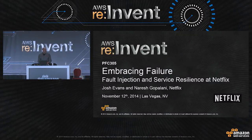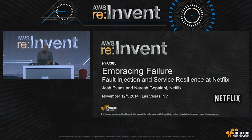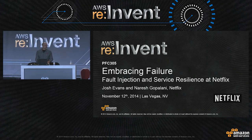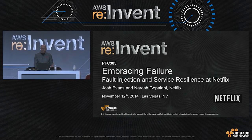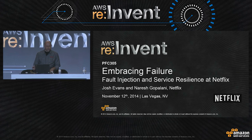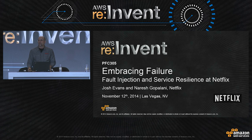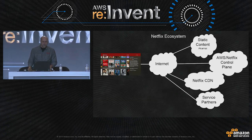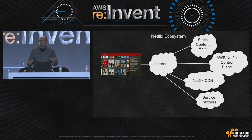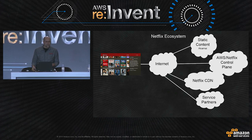Let's go ahead and get started. By way of introductions, I'm Josh Evans. I'm the director of operations engineering at Netflix. With me is a software engineer and architect. We're going to talk to you today about embracing failure and about introducing failure into your systems to make them more resilient. Before I do that, I want to talk a little bit about the Netflix infrastructure. As hopefully most of you know, we serve video and audio to our customers so they can watch movies and TV shows.